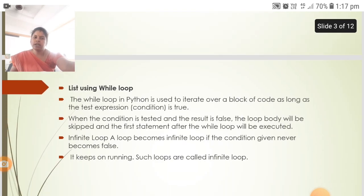The while loop in Python is used to iterate over a block of code as long as the test expression is true. When the condition is tested and the result is false, the loop body will be skipped and the first statement after the while loop will be executed.